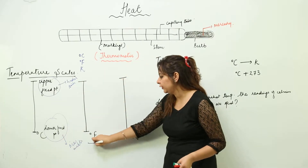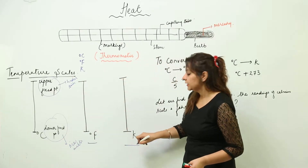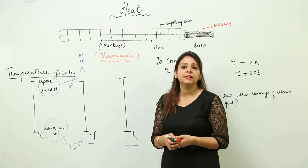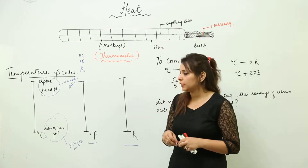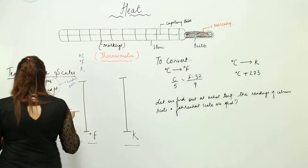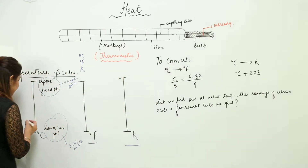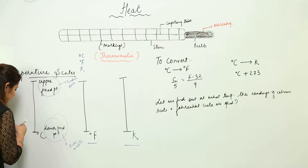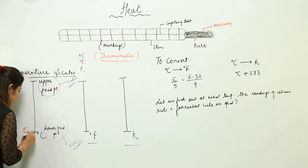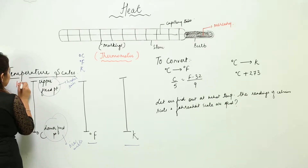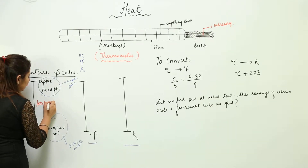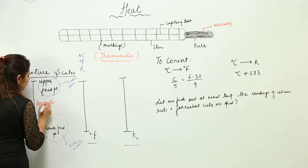For degree Celsius, the lower fixed temperature is 0 degree Celsius and the upper fixed point is 100 degree Celsius. The scale is divided equally into 100 parts. So the lower fixed point at which ice melts is 0 degree Celsius, and the upper fixed point at which water boils is 100 degree Celsius.